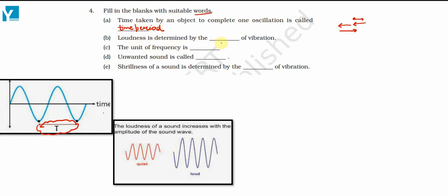Loudness is determined by the amplitude of vibration. We know loudness is determined by amplitude of the vibration because loudness is directly proportional to amplitude square.